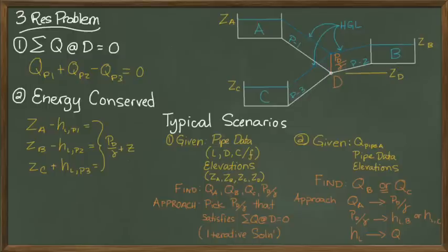There are, of course, other scenarios, but the key to approaching these problems is understanding conservation of mass—in other words, the summation of flows at D is zero—and conservation of energy dictates that the head loss from each reservoir to D results in the same pressure gradient at point D.